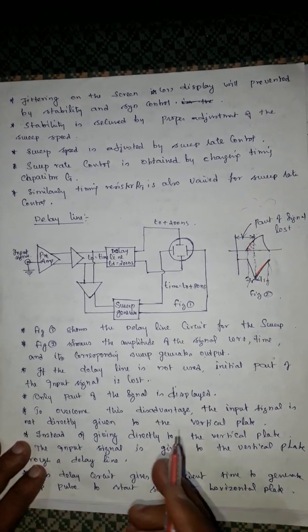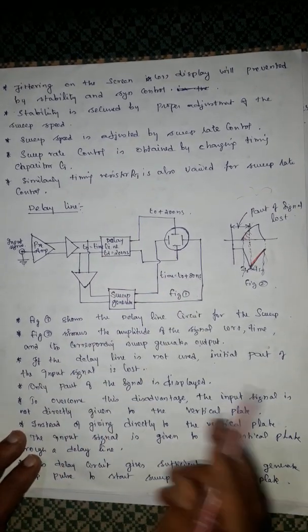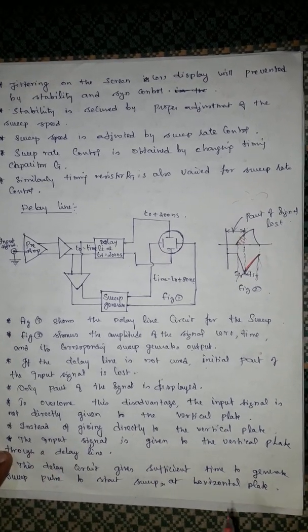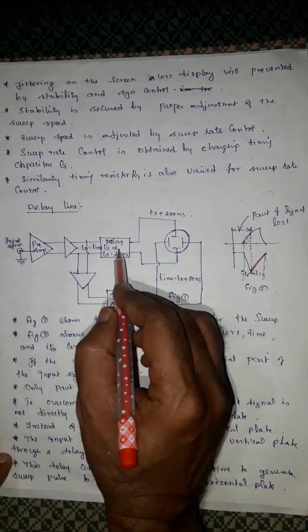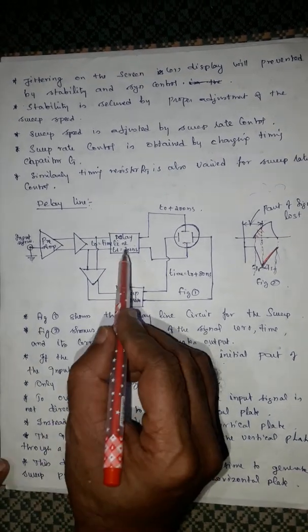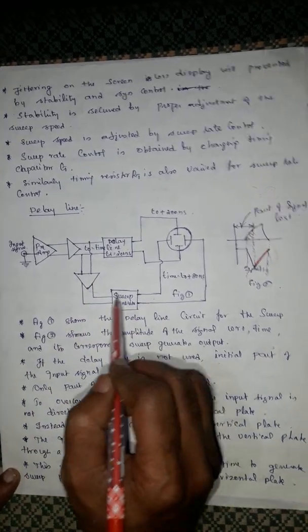Before that, delay line will be included. Instead of giving directly to the vertical plate, the input signal is given to the vertical plate through a delay circuit like this one. This delay circuit gives sufficient time to generate sweep.